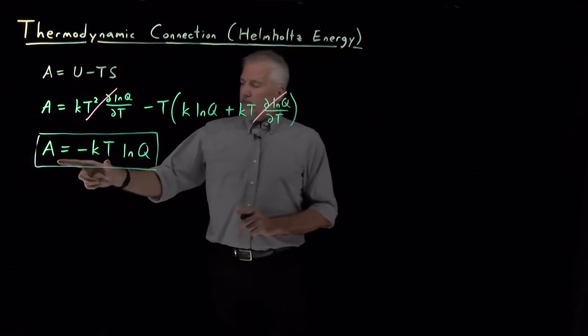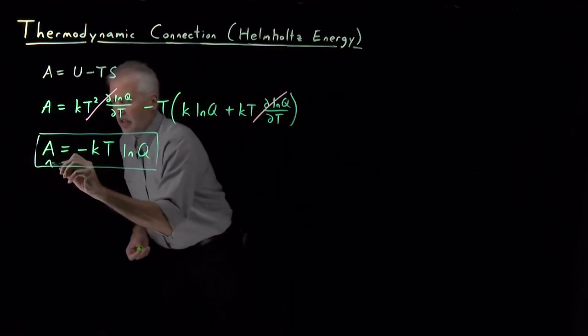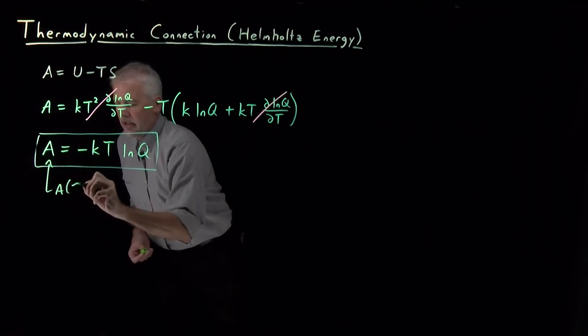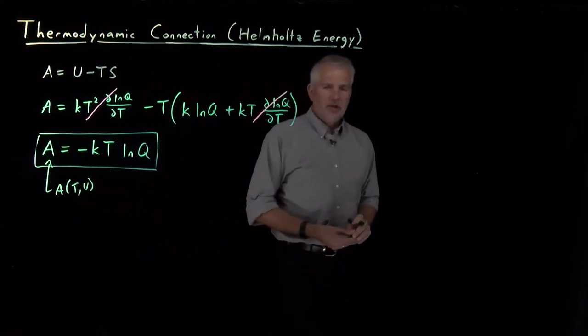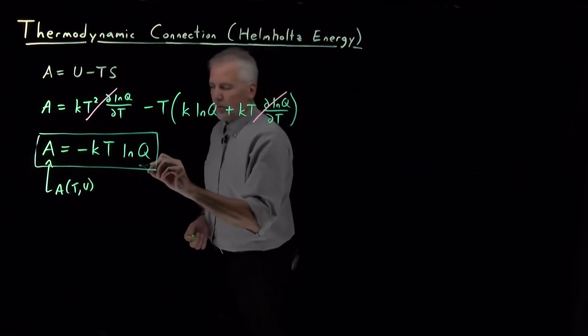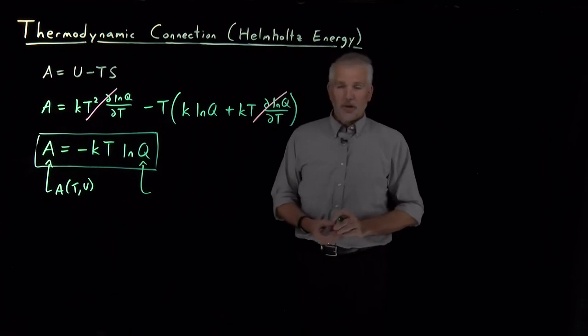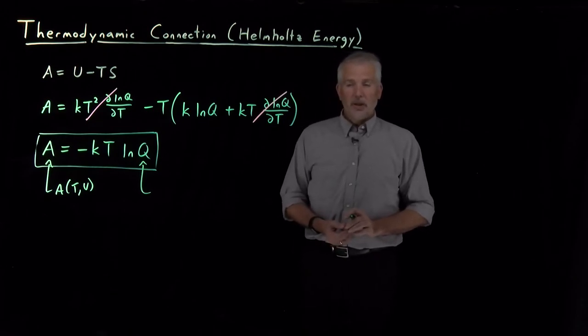The reason this expression is so simple, as we've seen, the natural variables for the Helmholtz energy are the temperature and the volume. It turns out the natural variables of the partition function Q are also temperature and volume.